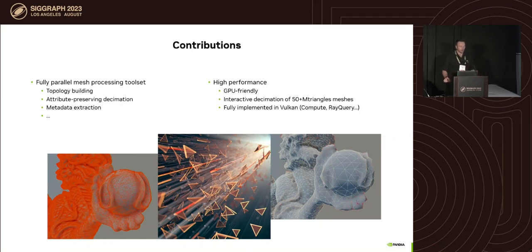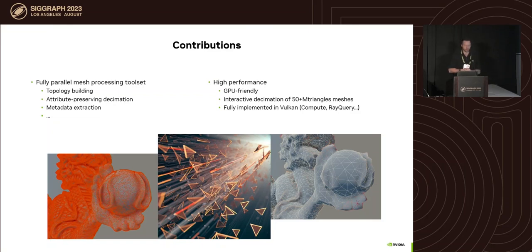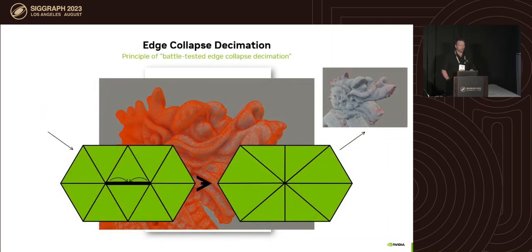What we're contributing through this work is fully parallel processing. We build topology, preserve mesh attributes for consistency, and extract metadata information — all through the GPU. It's done in an almost interactive way: depending on the number of triangles, up to 50 million triangles can be processed quite interactively. All of this has been implemented in Vulkan so far.